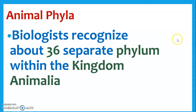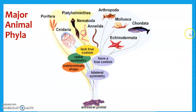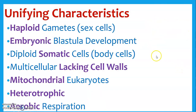So animal phyla — there's like 36, we're only going to look at 9. Basically mostly these guys right here — these are kind of the big 9. And there's another cladogram right here, so hopefully you can understand it. Sorry, it's a little fuzzy. But we'll get through all these, and then we'll finish off with Chordata, which would be us humans.